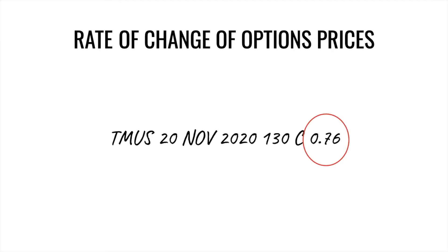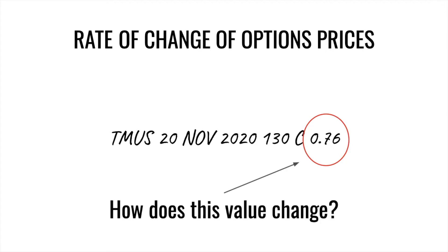If you'll recall, with an option, we had a stock, an expiry date, a strike price, and whether the option was a call or a put, and then the price that the option was trading at. A lot of people who trade or buy or sell options find that the price the option can be bought or sold at is very important. So these Greeks tell you, as the trader or the person involved in the transaction, how much an option price is going to move.